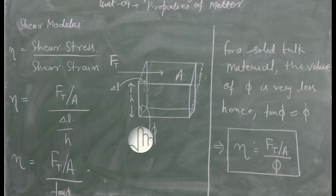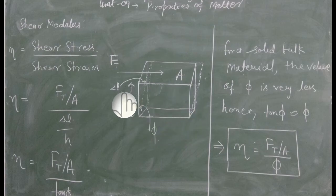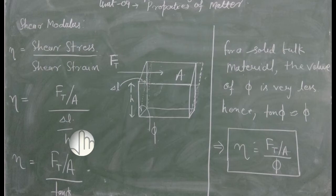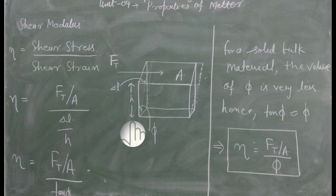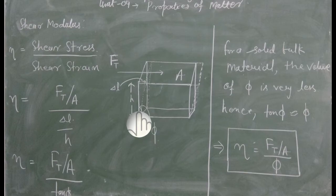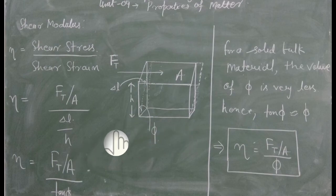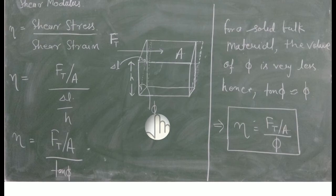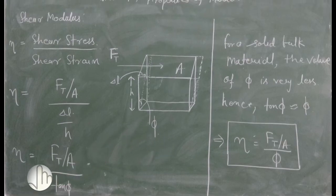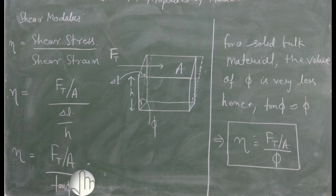Shear strain ہم نے last lectures کے اندر دیکھ لیا ہے کہ جب اوپر والی فلق delta L سے displace ہو جاتی ہے نیچے والے فلق کے تناظر میں تو delta L upon h جو یہ side ہے، delta L upon h۔ اس geometry سے دیکھو گے تو یہ phi (φ) angle ہے اور trigonometry apply کرتے ہیں تو delta L upon h is equal to tan φ۔